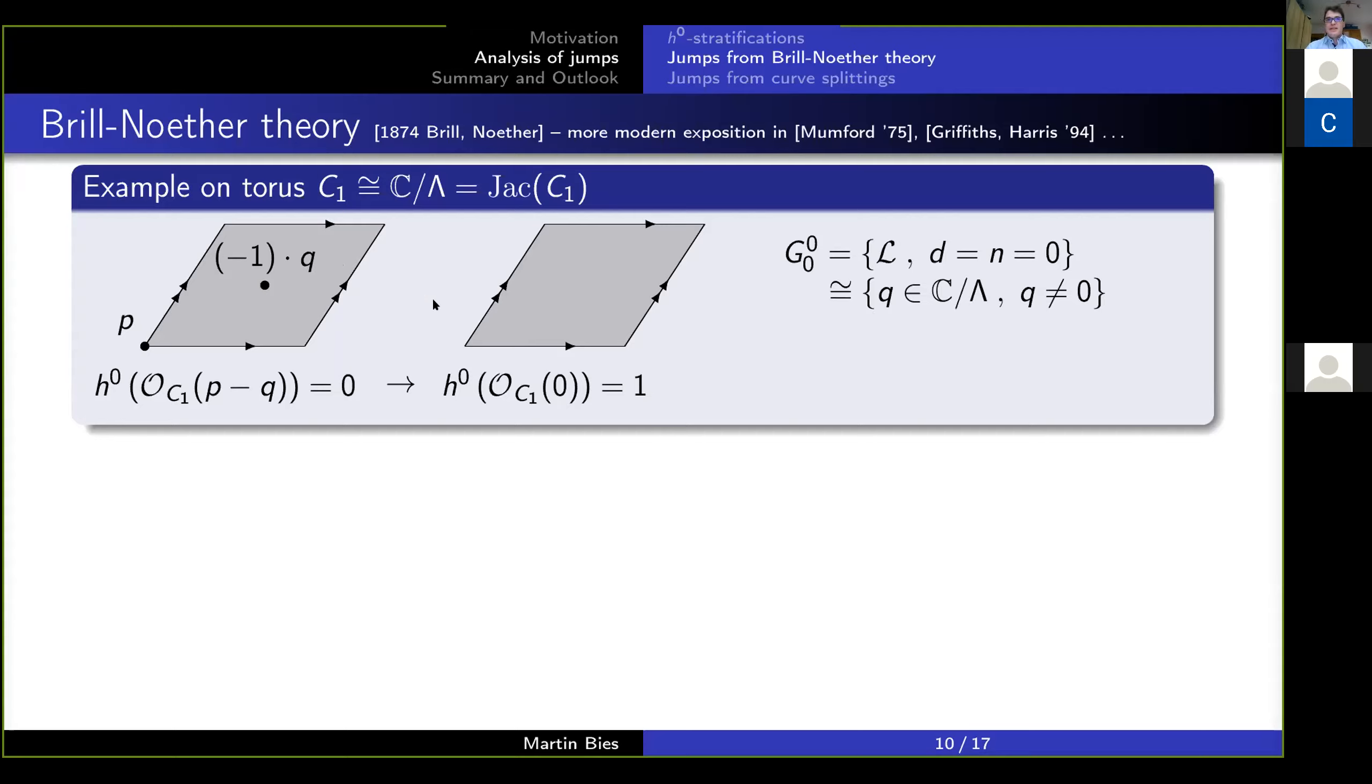The second case is I make Q equals zero. I consider a transition where Q goes to the origin. Then suddenly the divisor becomes trivial and there is a section, namely all constant functions satisfy these vanishing conditions. So that is the second space, G^1_0. And this, what I've just shown you here, is generalized by Brill-Noether theory to arbitrary genus.